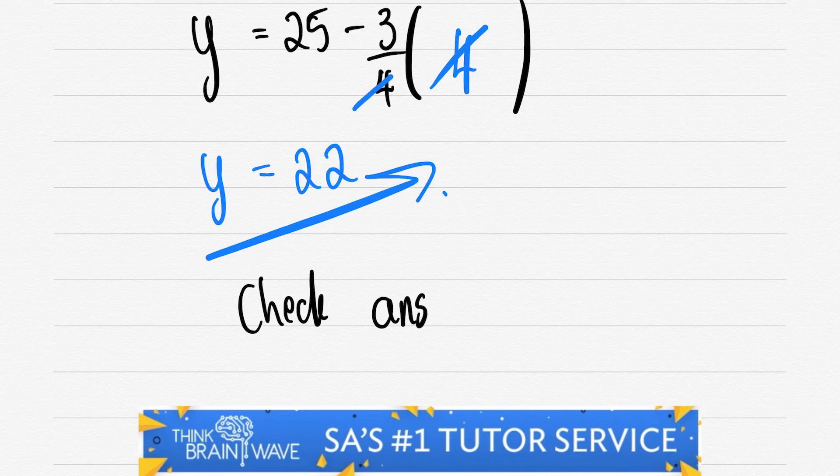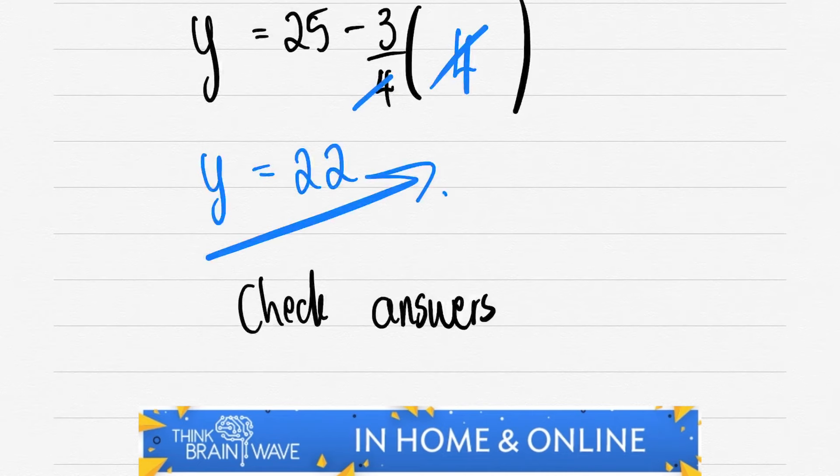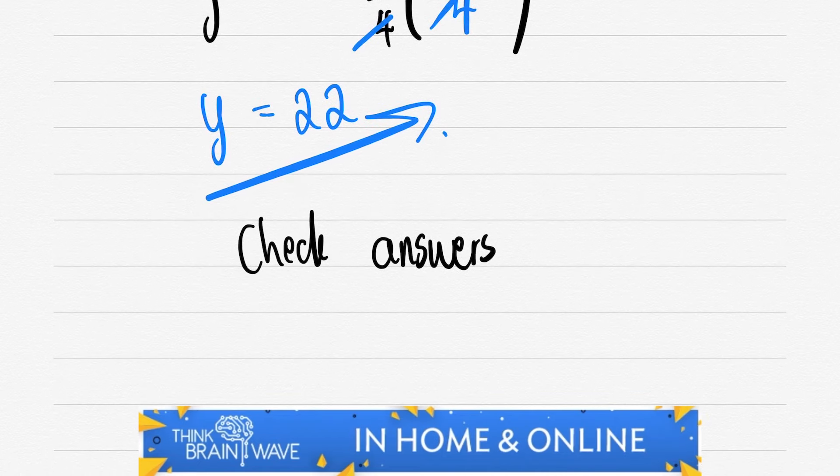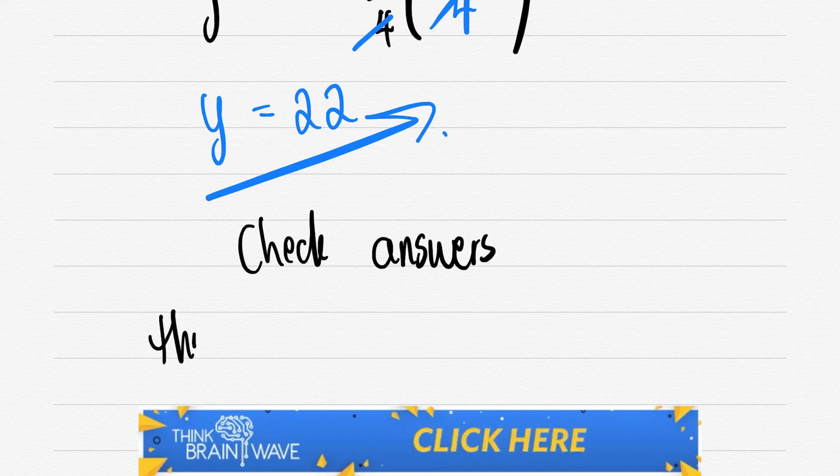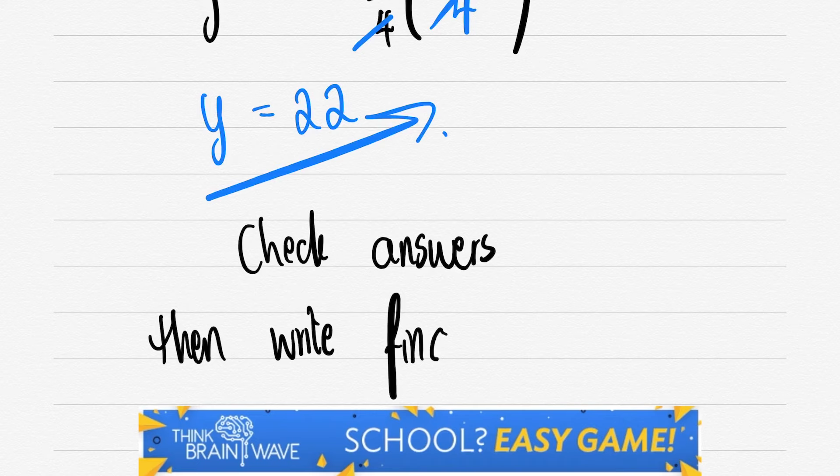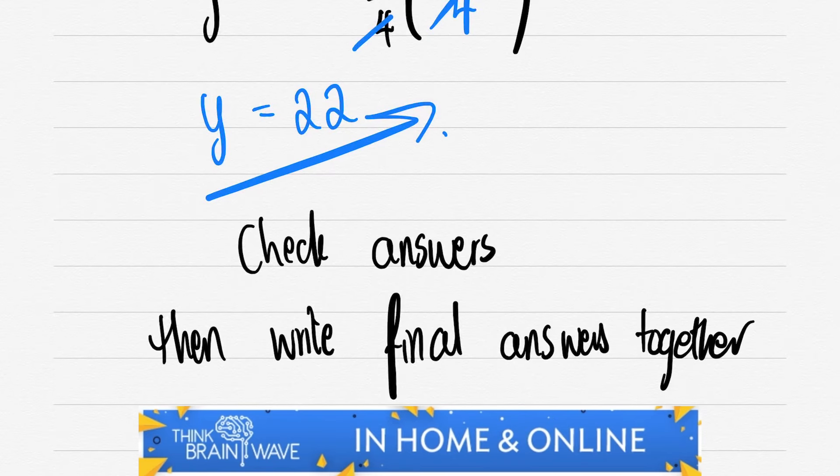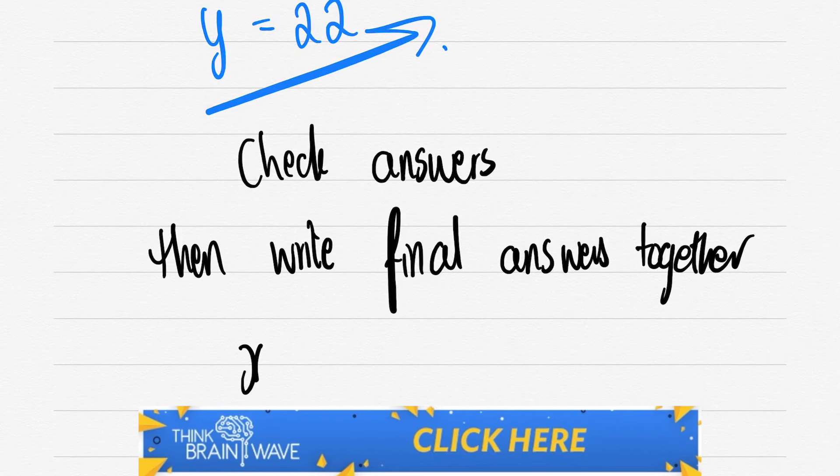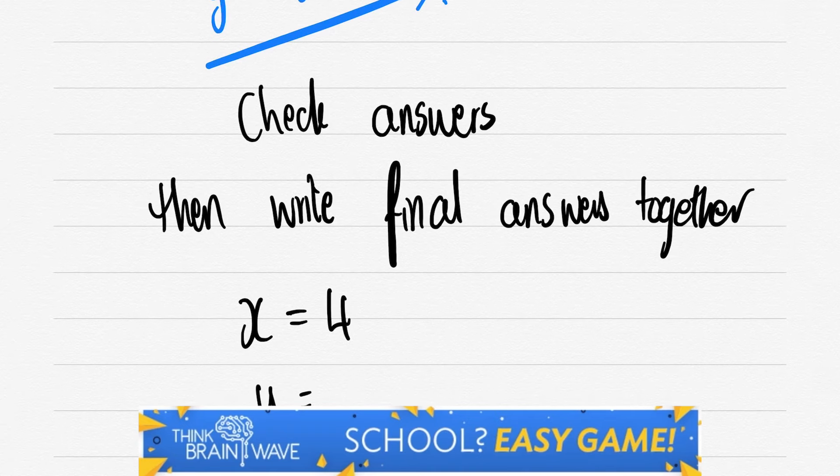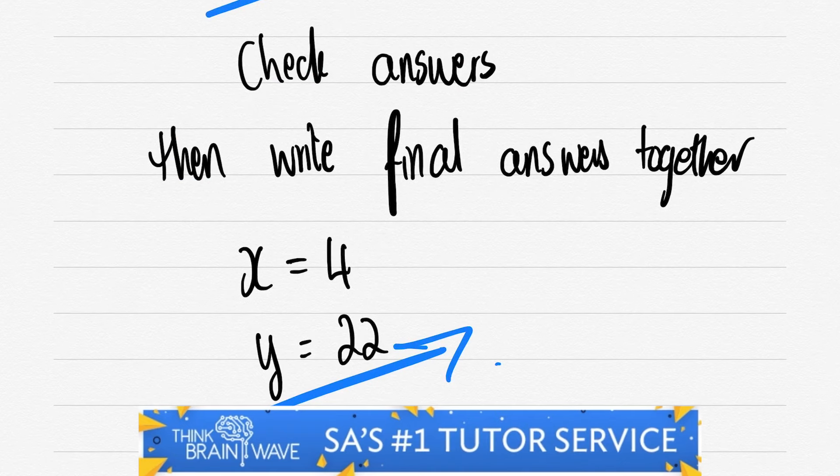Now we need to make sure that they're correct. So we go and check our answers. Once you've got our check done we then write our final answers down as we want to be very professional in answering our test papers. Alright. So x = 4 and y = 22. Easy game.